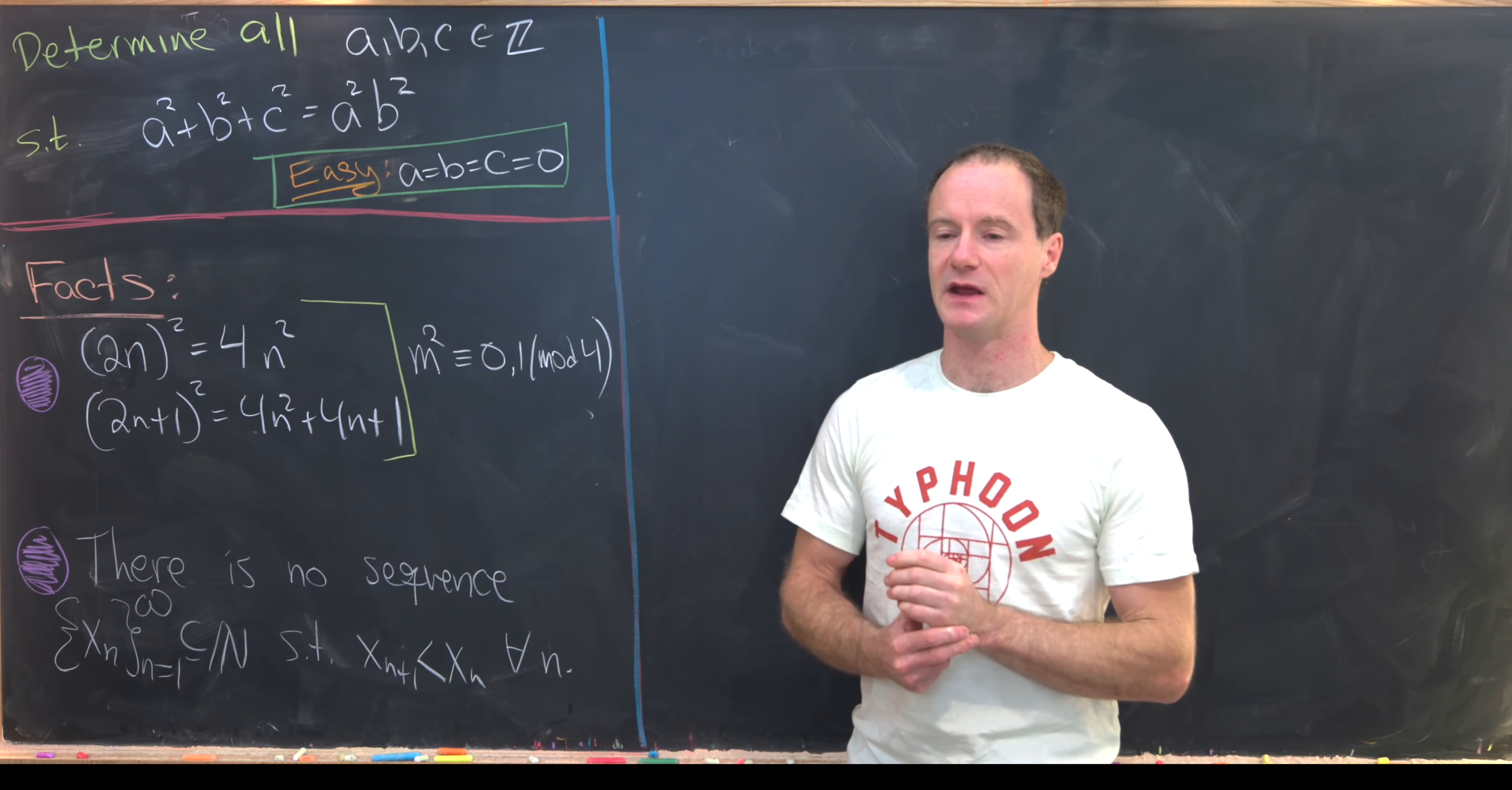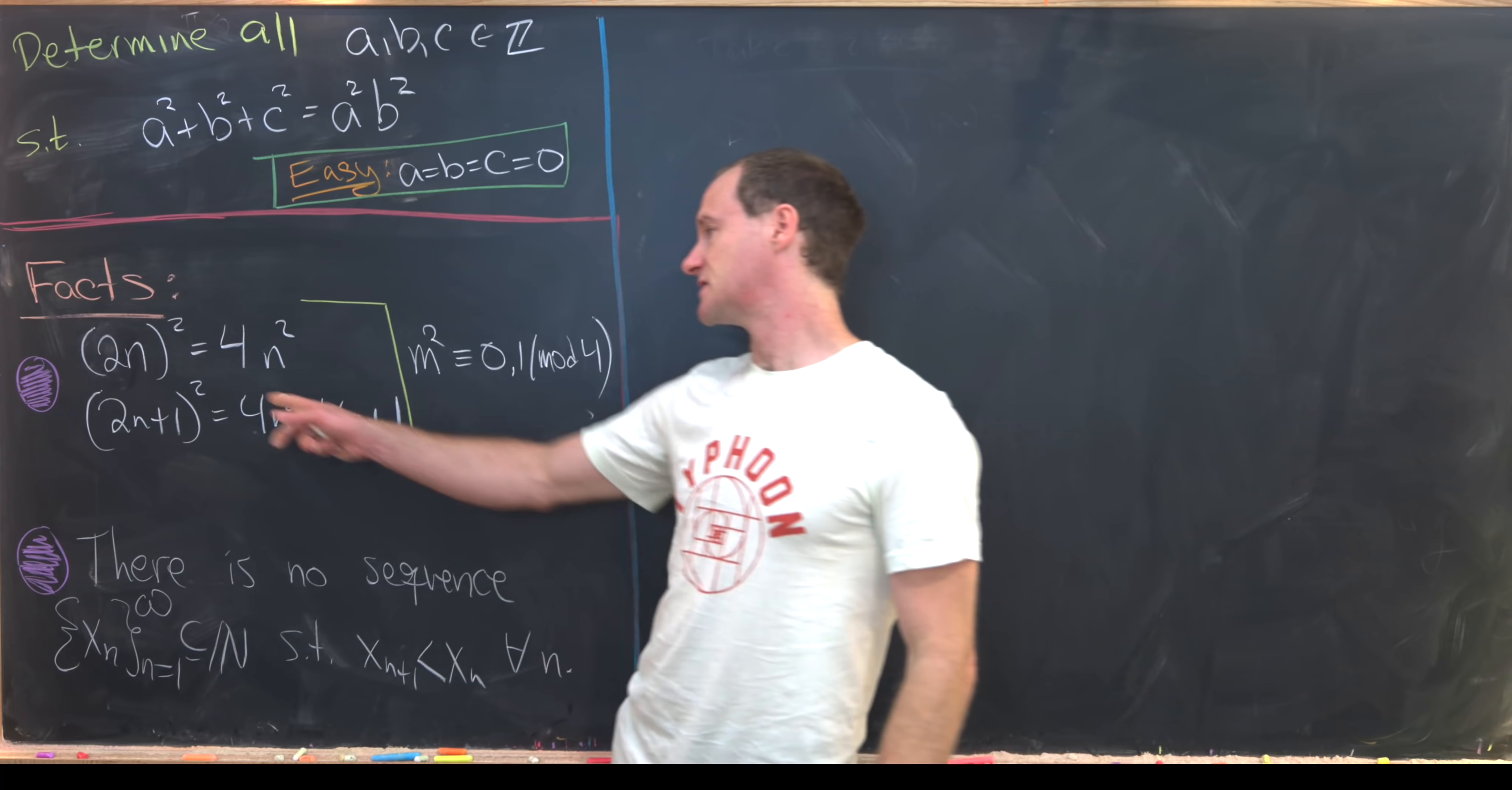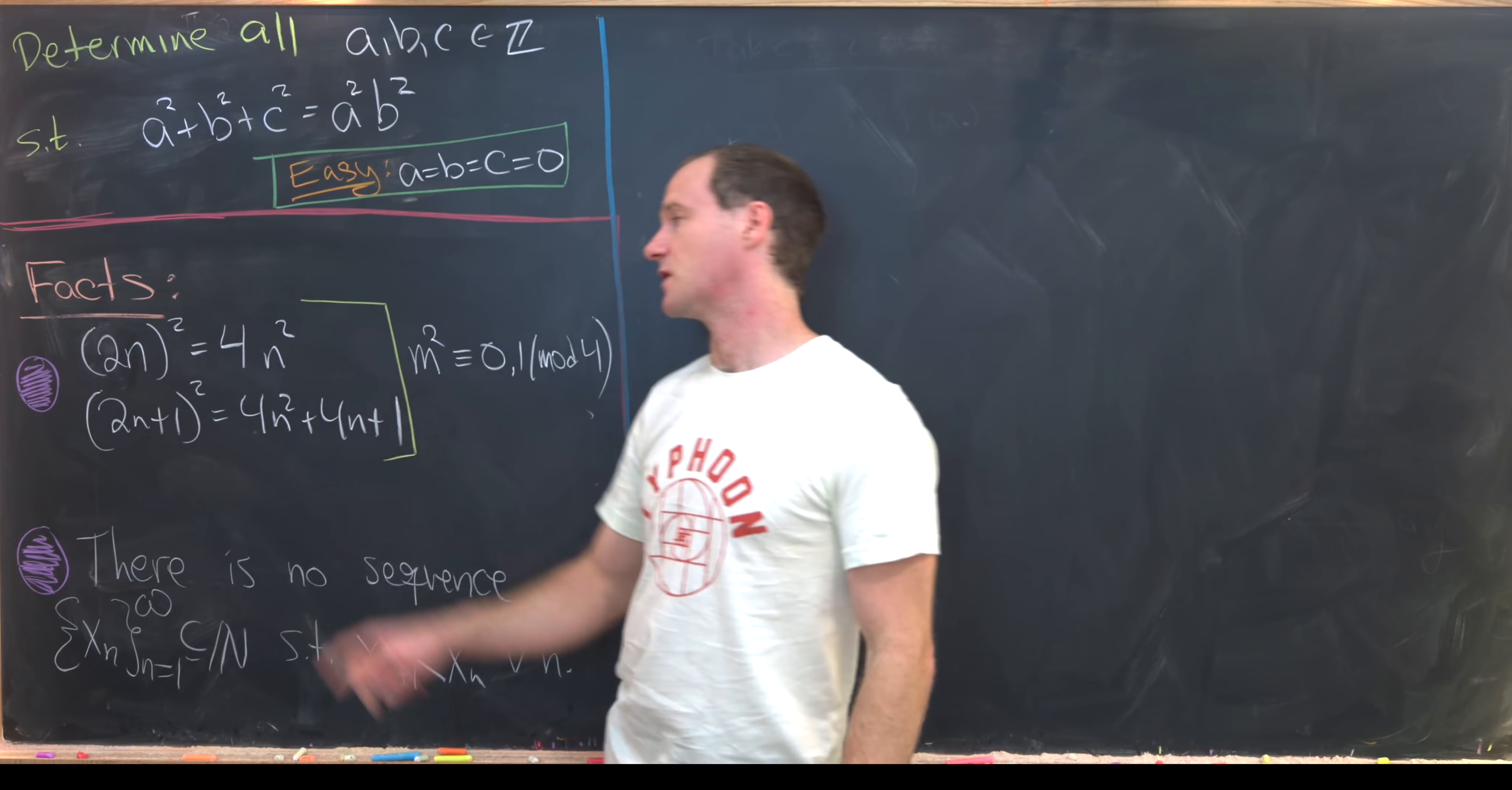It's impossible to have a remainder of 2 or 3. And that's because if you square an even number you get a multiple of 4. That's pretty clear.